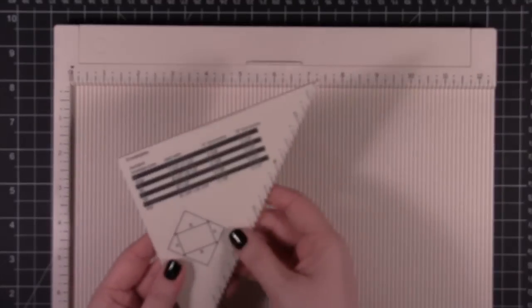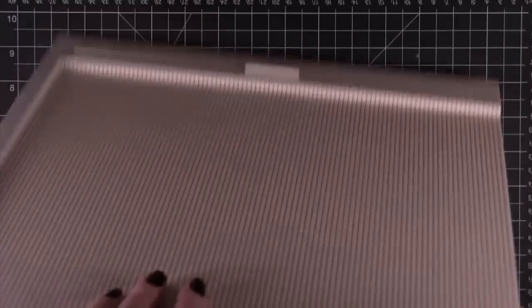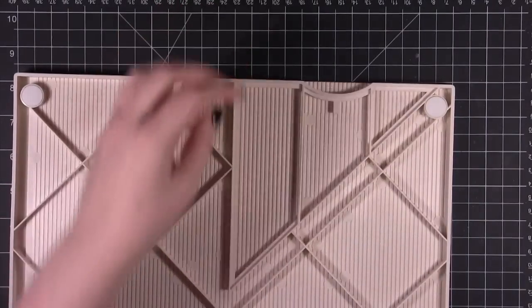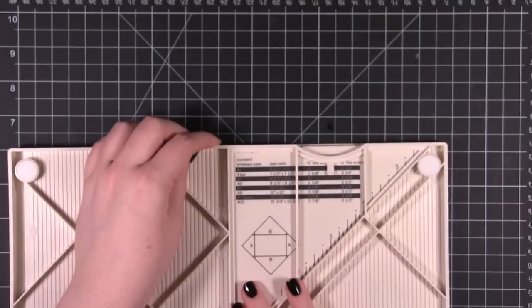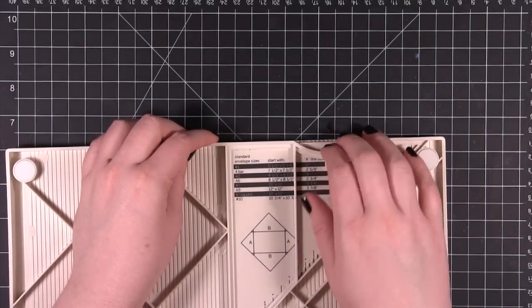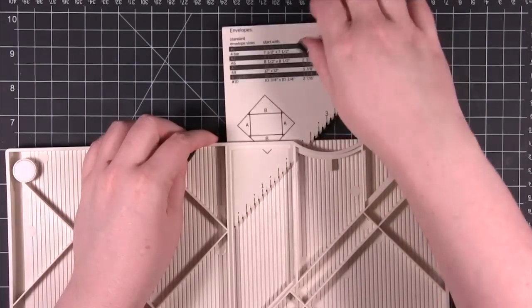When you buy the scoring board it has this template that comes inside which by the way you can turn your scoring board completely over and slide this in and store it right there. It doesn't come out very easily. It will snugly fit right in there.